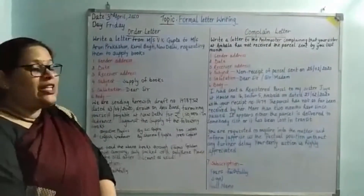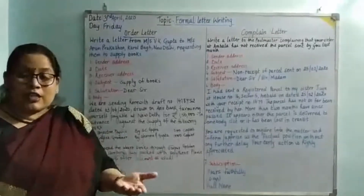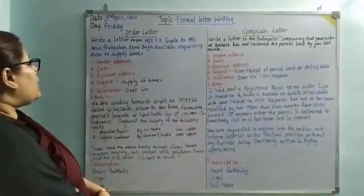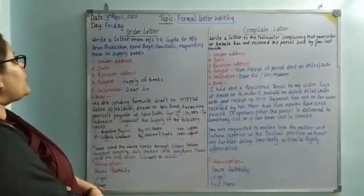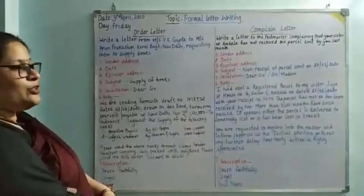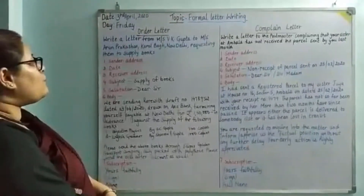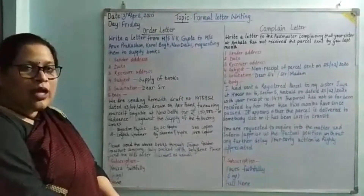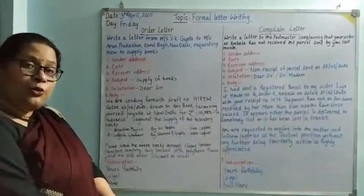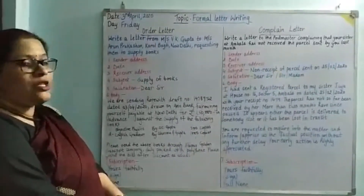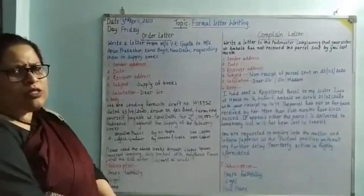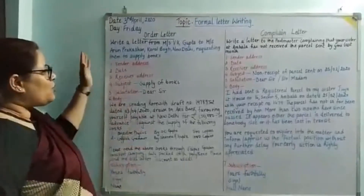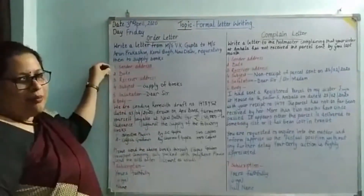In an order letter, you will be ordering something from someone. Let's take a sample: write a letter from Mr. VK Gupta to Mr. Arun Prakash in Karol Bagh, New Delhi, requesting them to supply books. The list is not given in this question; in certain questions a list will be given. Since it has not been mentioned here, you can use as many books as you want. I have not written down the sender address — by now it is clear that we follow a block format.